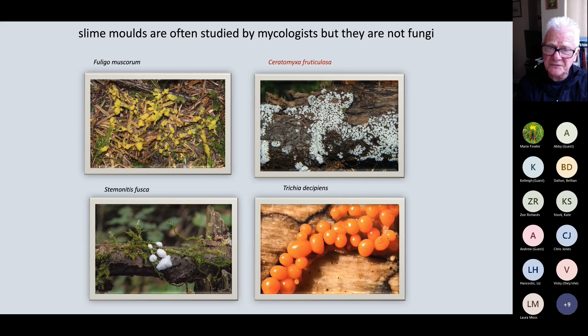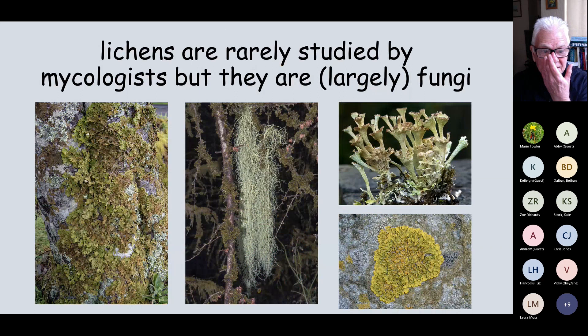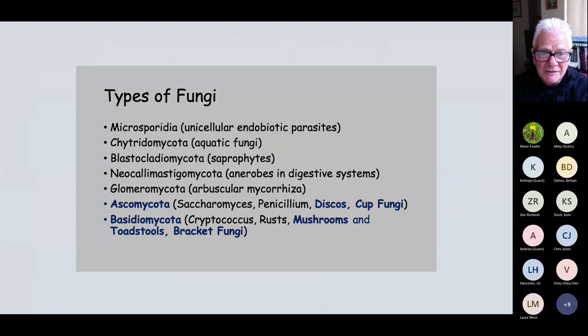Here are four panels showing four types of slime molds, which are often studied by mycologists, but as I said they are not fungi and they're not going to be part of this course, although we may come across them. This is a really specialized area of mycology. These are some lichens — rarely studied by mycologists, but really they are fungi. Again, it's not part of this course, so we won't be talking much about them at all.